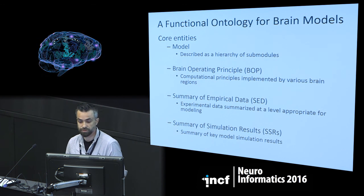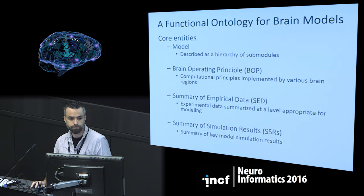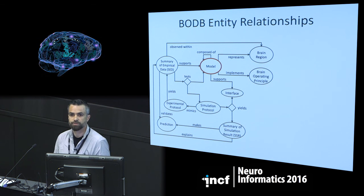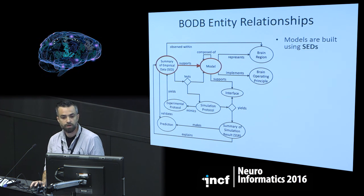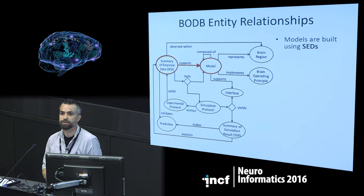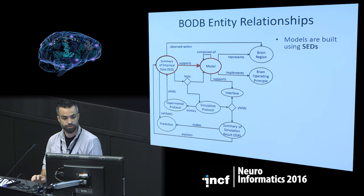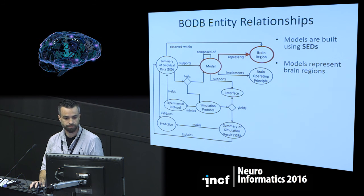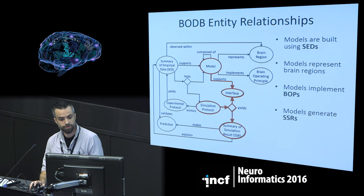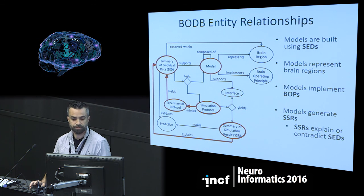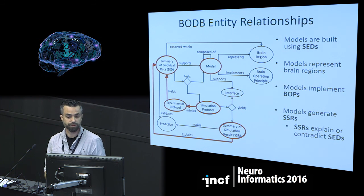We also store summaries of the key model simulation results. Models are built using summaries of empirical data — these embody the assumptions made by the model and inform its design. They represent brain regions or networks of interacting brain regions, implement brain operating principles, and generate simulation results. These simulation results can be linked to summaries of empirical data that they either explain or contradict, and where no appropriate empirical data exists, they can make predictions.